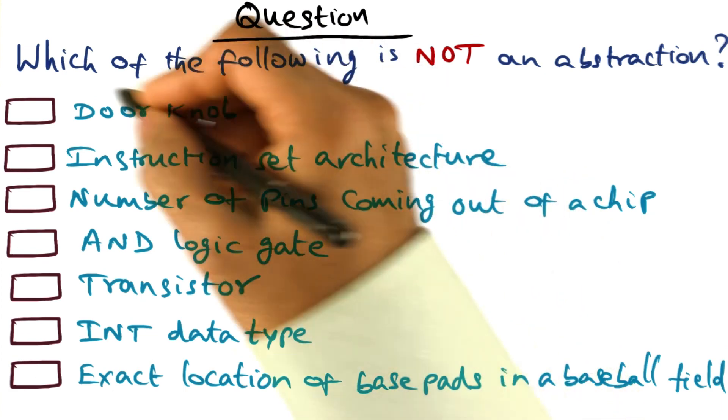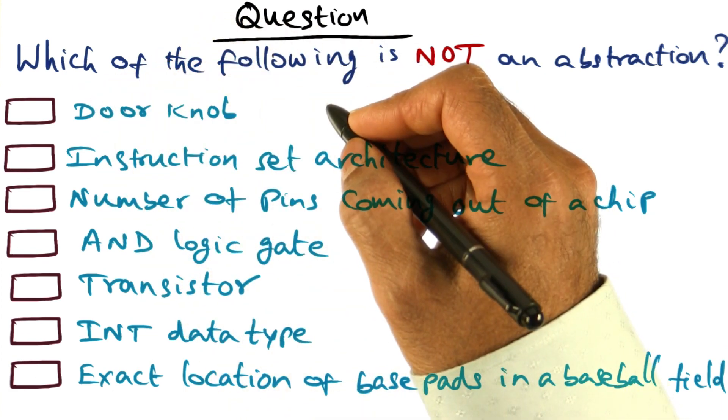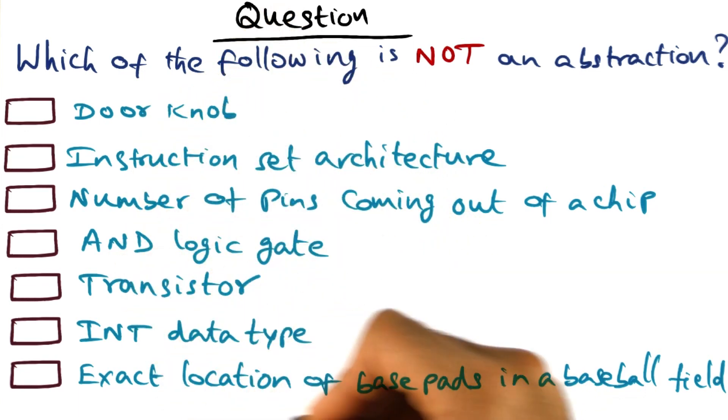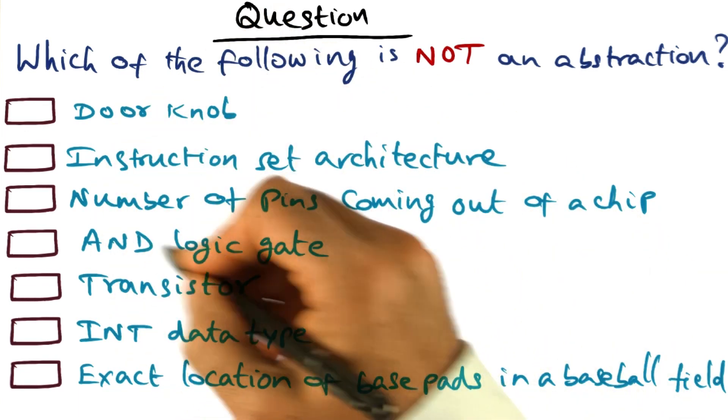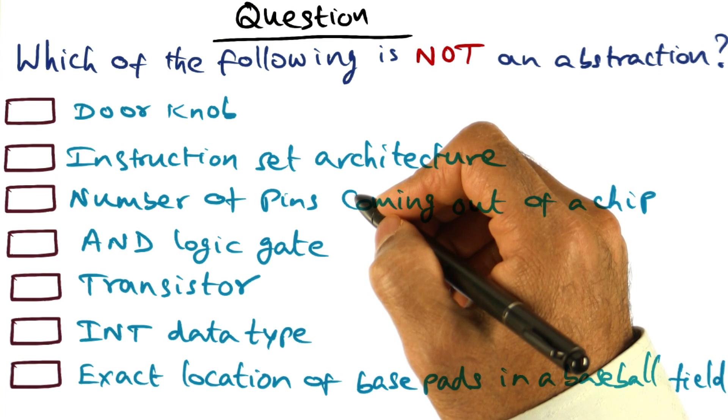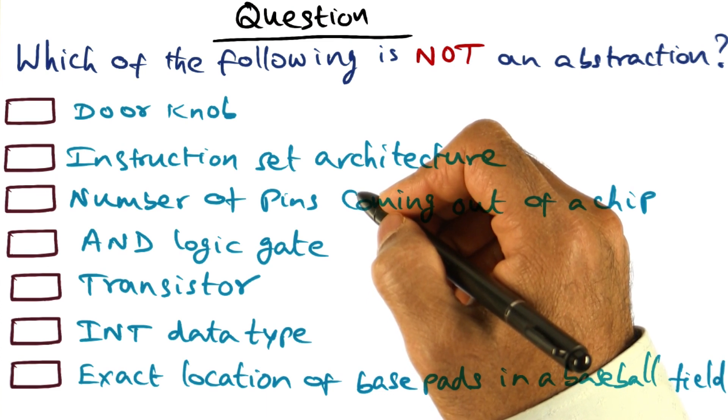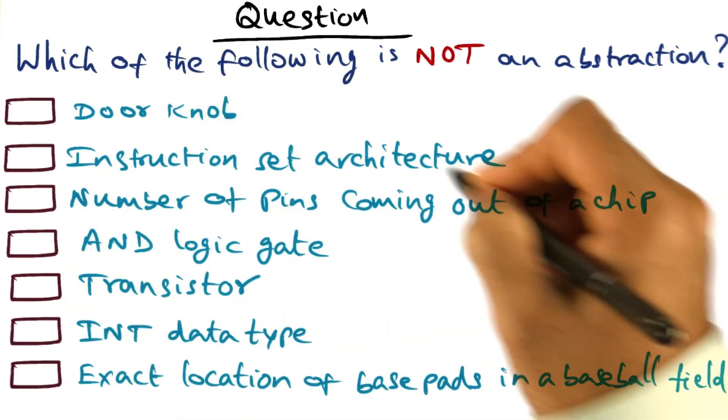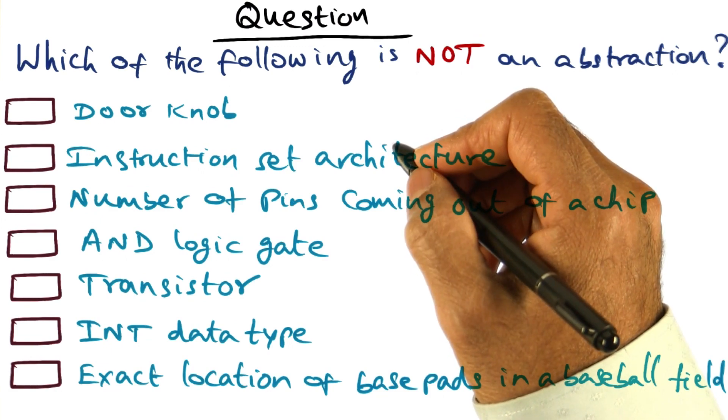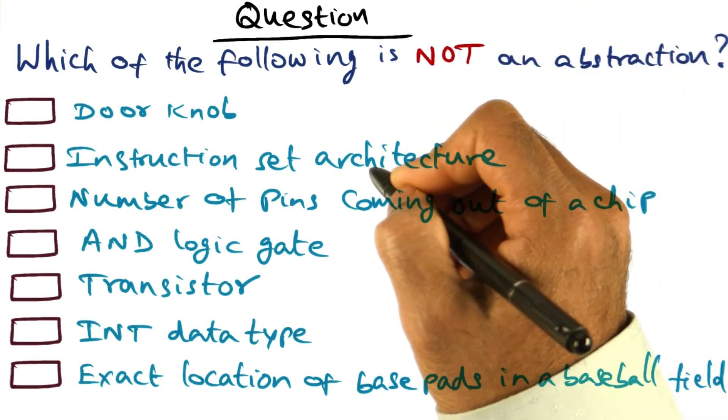With that in mind, what I want you to do is think about the objects and the terms that I've laid out on this panel for you. And you may have come across many of them, and from this set, tell me which of these is not an abstraction.